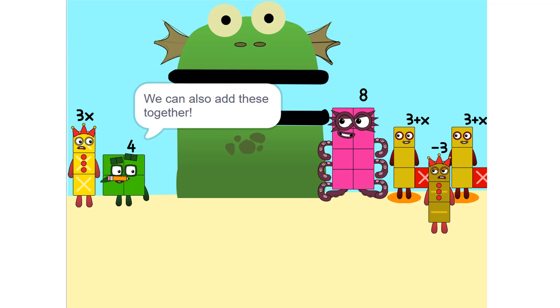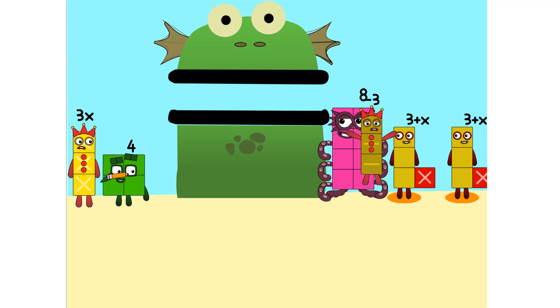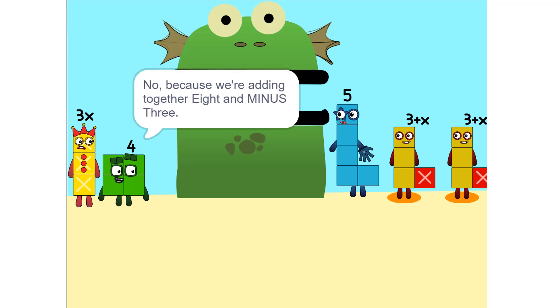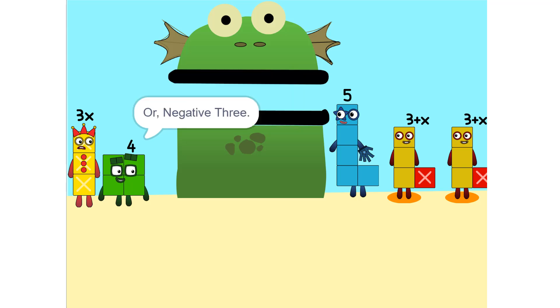We can also add these together. 5. Wouldn't it be 11 since 8 plus 3 is 11? No, because we're adding together 8 and minus 3, or negative 3. So it's 5. Oh.